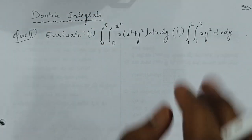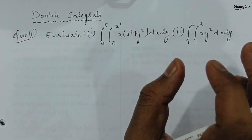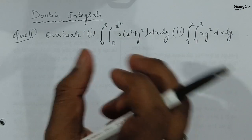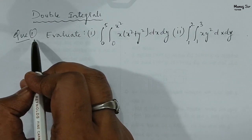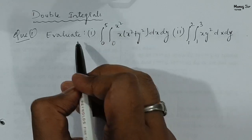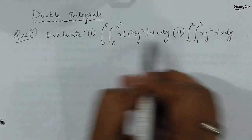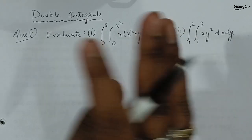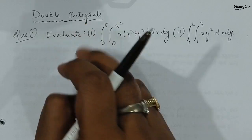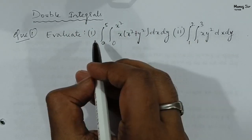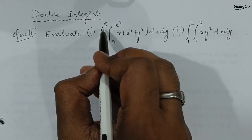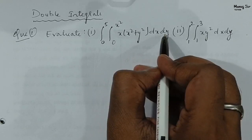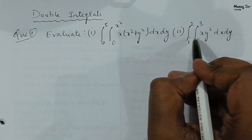Welcome to video number two. In this video we are going to start problems on double integrals. In question number one, we are going to evaluate two problems based on double integrals. In the previous video, that is video number one, we saw three cases on double integrals on which questions are asked. The first problem is integral zero to five, integral zero to x square, of x into x square plus y square dx dy.